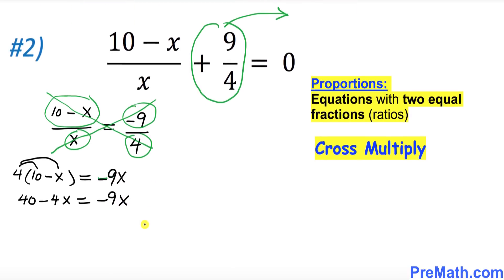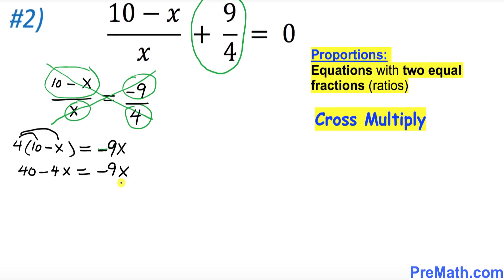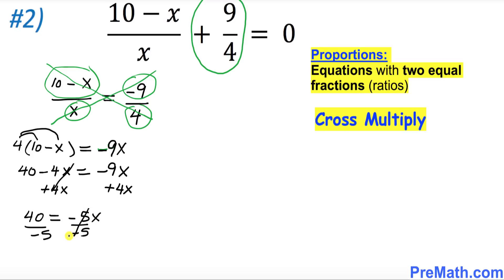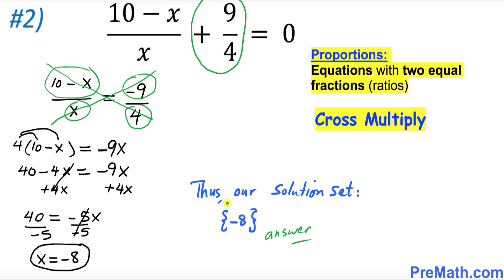We want to isolate x, so we add 4x to both sides. The negative 4x is gone, giving us 40 equals negative 5x. We then divide both sides by negative 5, so x turns out to equal negative 8, and that is our solution. Thus our solution set is x equal to negative 8 and that is our answer. Thanks for watching, and please subscribe to my channel for more exciting videos.